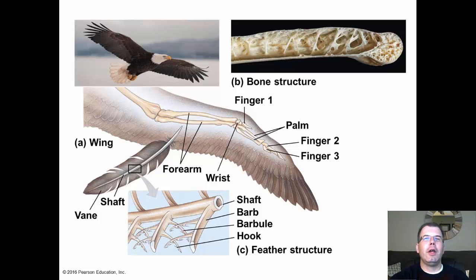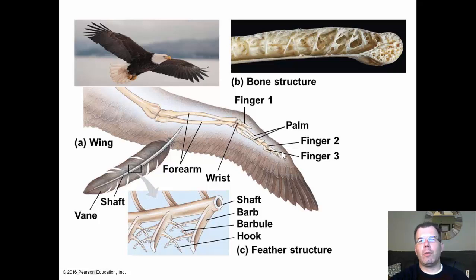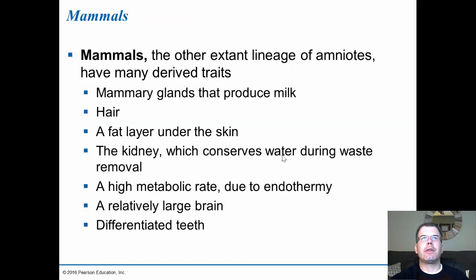Looking at the feather structure, inside the feather they have barbs and barbicules with hooks that link together to help with flight. These were once scales but have turned into feathers. The wing structure with the arm shows they've kind of lost their individual fingers — they're fused together and become more of a wing-like structure.